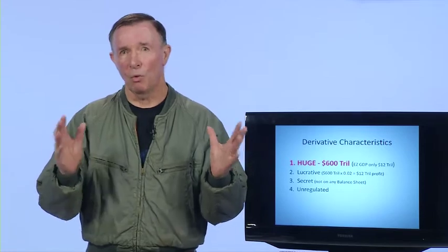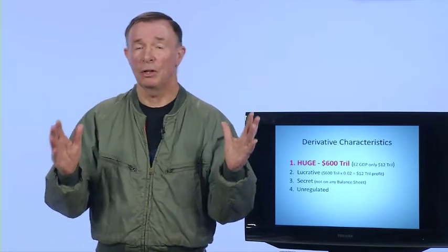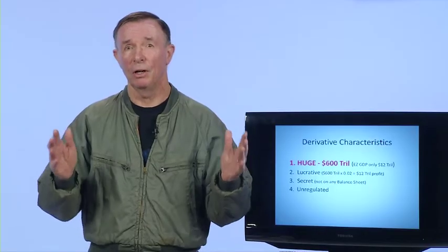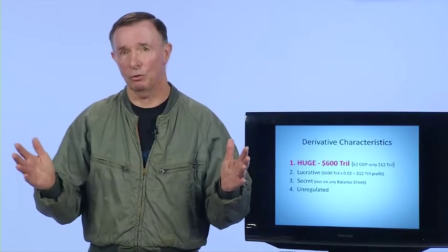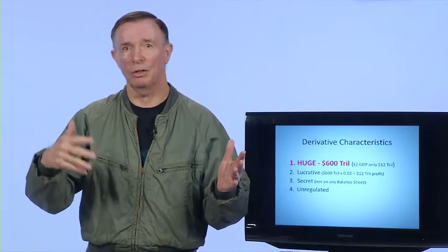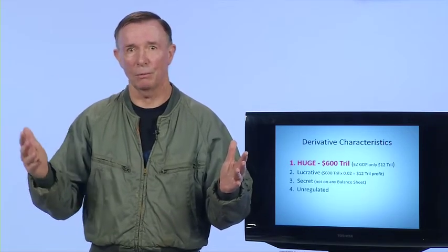The second reason why derivatives are huge is the people that are preparing these get about 2% commission when they prepare them. $600 trillion times 2% is $12 trillion. And that's what I figure the biggest banks have made over the last decade. That's why these guys are going home with $10 or $100 million bonuses.